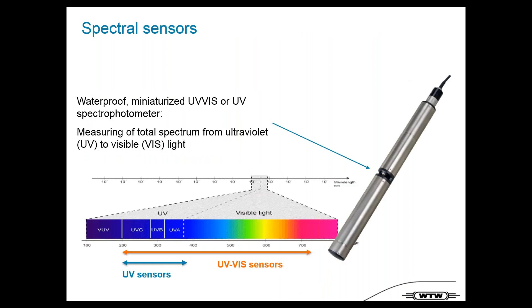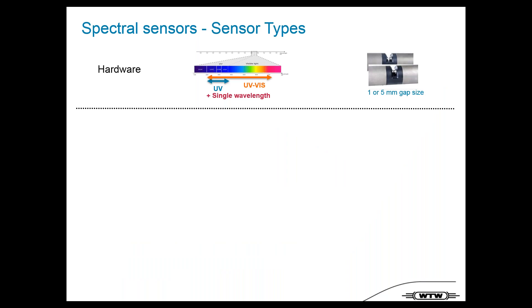The next topic is spectral sensors. We have a waterproof miniaturized UV-Vis spectrometer that measures the total spectrum from UV ultraviolet to visible light. Our UV sensors operate from 200 to 390 nanometers. We have different sensor types — UV or UV-Vis sensors and single wavelength sensors — with one or five millimeter gap options.